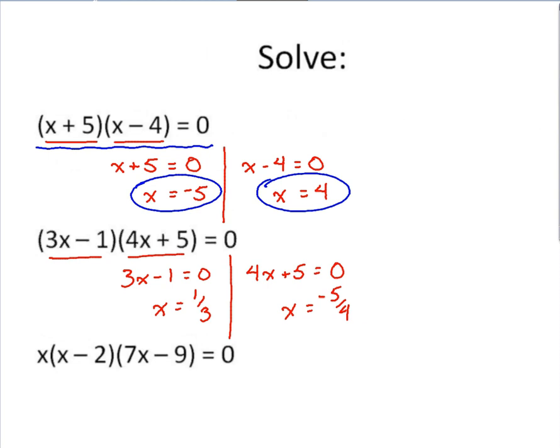So I appreciate that if I take 1 third or I take negative 5 fourths and I plug back into this original equation I get a true statement back. Leaving us with the last one to consider. In the last one you've actually got three pieces that are being multiplied. You've got this x here, x minus 2, and 7x minus 9.